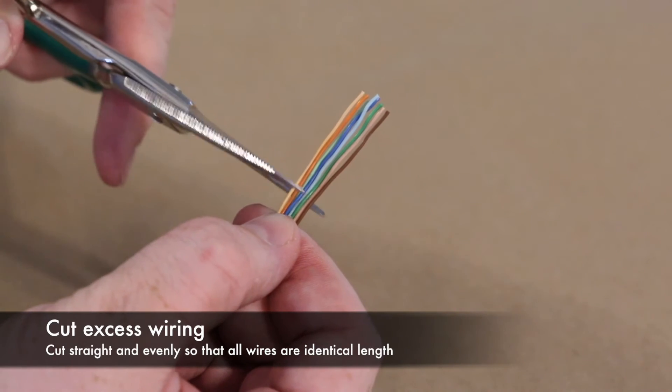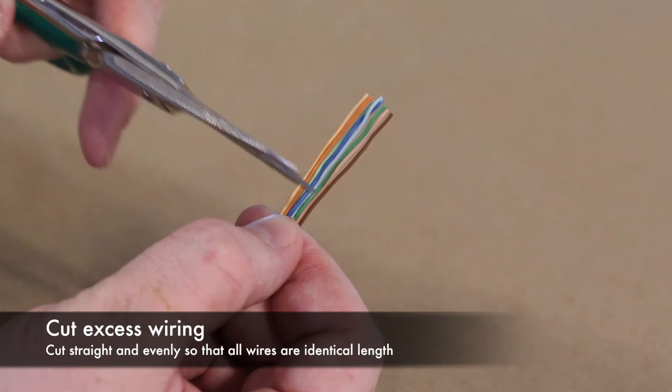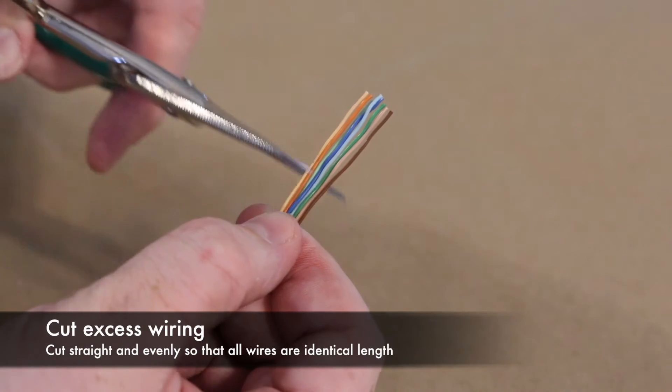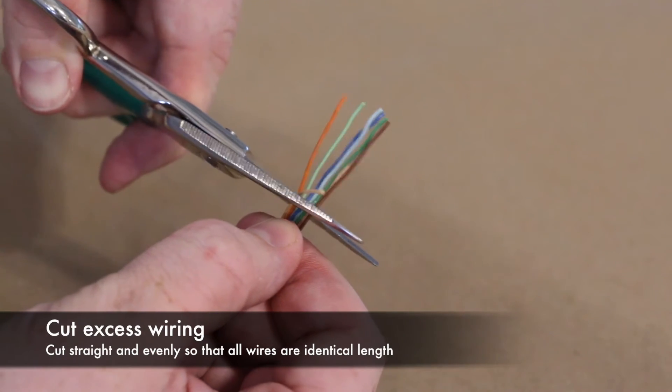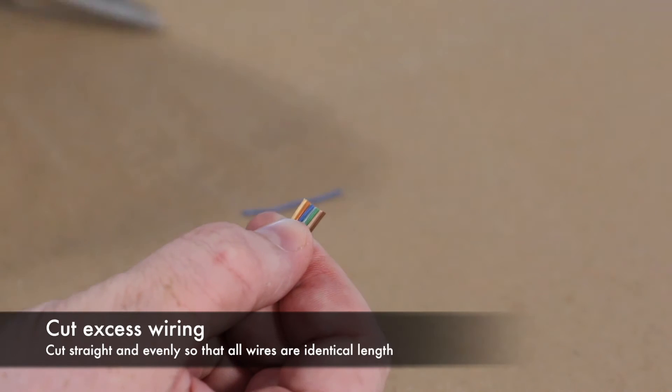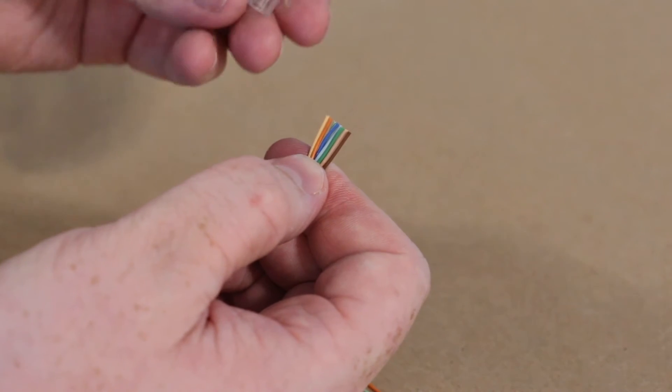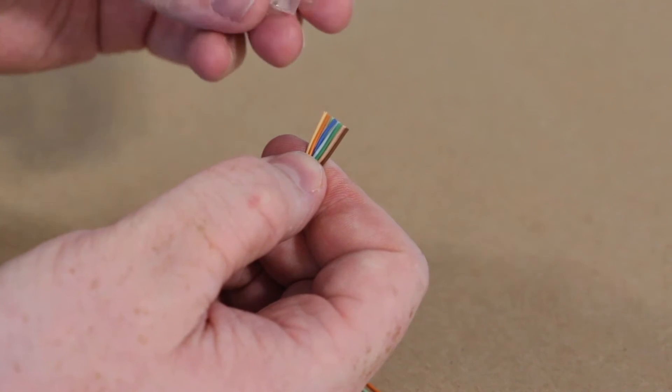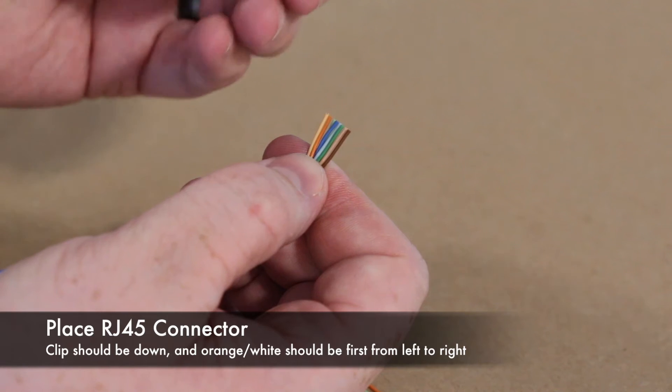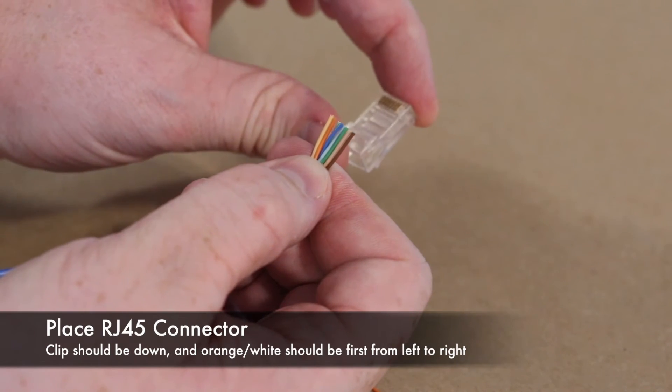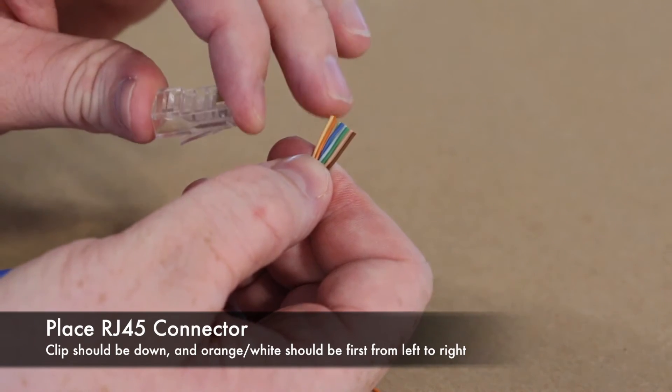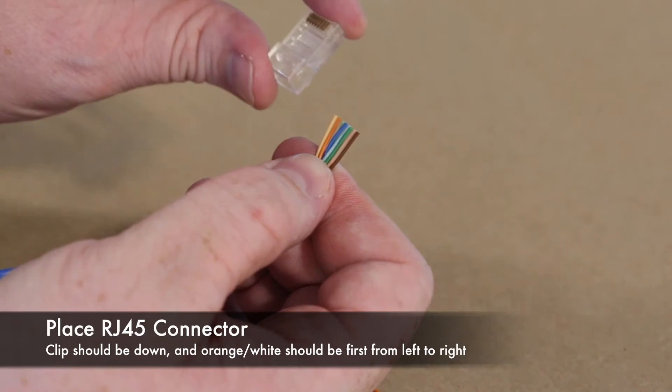We want to make sure we cut very cleanly and that all the individual wires are the exact same length. I've re-verified that the wires are still in the correct order. So now we're going to place the RJ45 connection on the cable. Now you'll want to have the clip side down and the orange white and the orange is on the left.